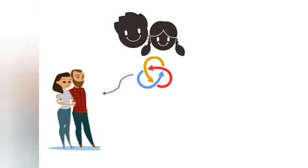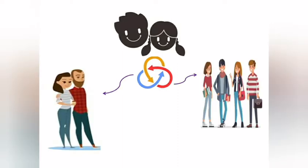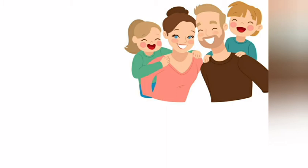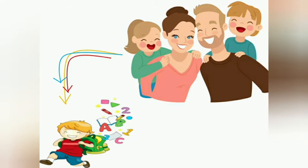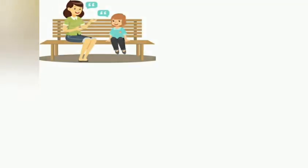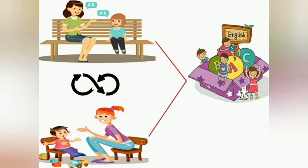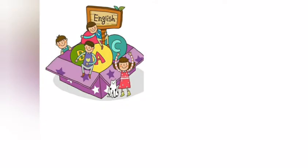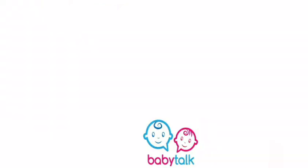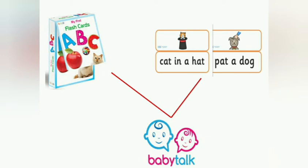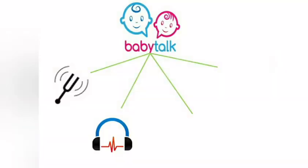Children acquire language through interaction — not only with their parents and other adults, but also with other children. All children who grow up in normal households surrounded by conversation will naturally acquire the language being used around them. Another way is that adults who like to speak with them directly and continuously also help them acquire language. This is what we call baby talk, which has a simpler vocabulary and sentence structure than adult language.